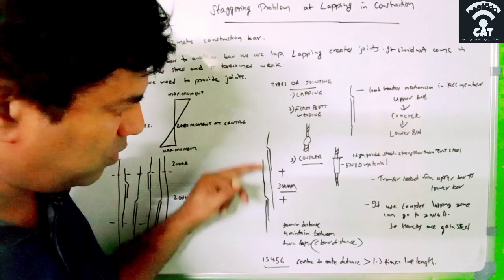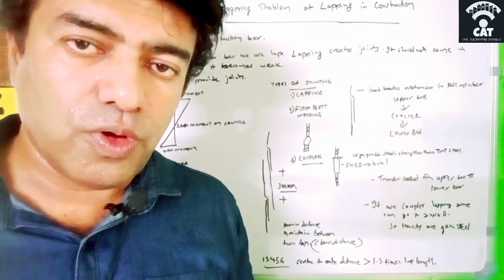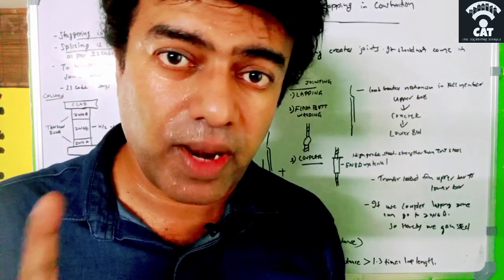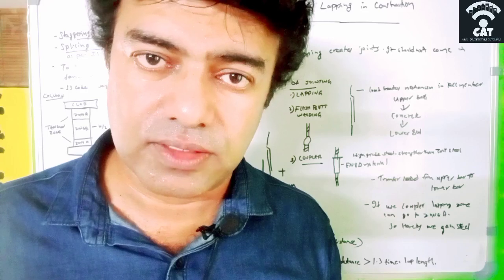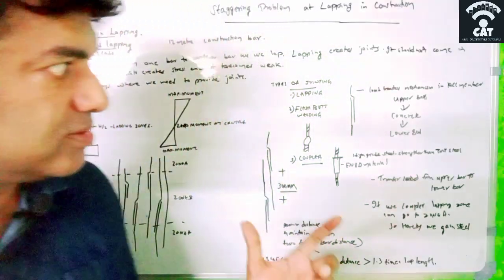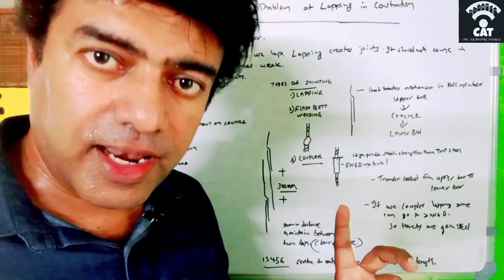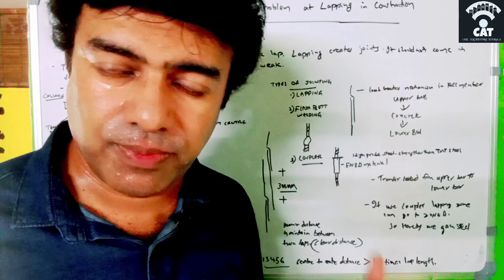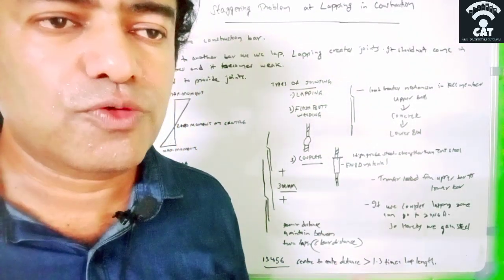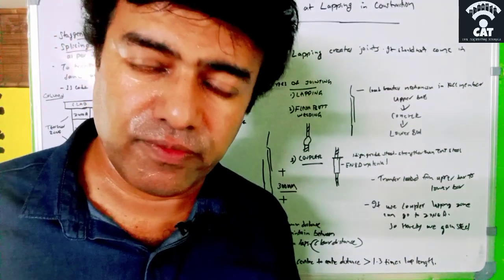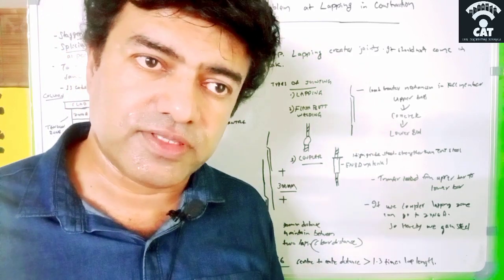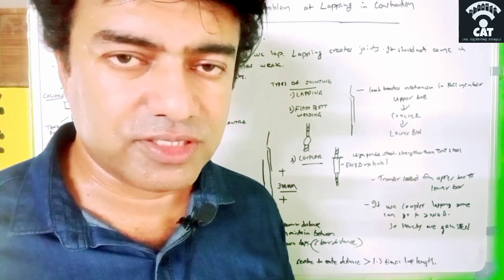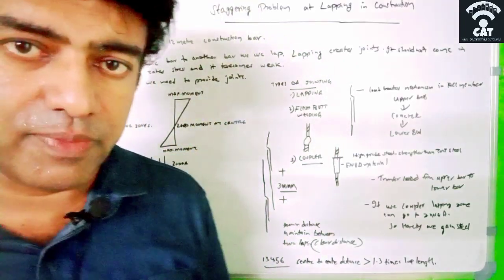Now you understand staggering and how to provide it in a column. Note that 'splicing' is another word used in IS code for lapping. Regarding welding — it is not much advisable unless flash butt welding is used. For larger bar diameters where welding is not feasible, we use couplers. A coupler is made of high-grade steel, also called EN8D material, which is a higher grade than TMT steel.